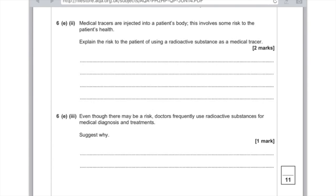6E part 2, medical tracers are injected into a patient's body. This involves some risk to the patient's health. Explain the risk to the patient of using a radioactive substance as a medical tracer. Well, remember, radiation can cause ionization. That's one mark. And that ionization may mutate or kill healthy cells. Or you could say it could literally just cause cancer. Part 3, even though there may be a risk, doctors frequently use radioactive substances for medical diagnosis and treatments. Suggest why. And you just need to say that it's due to the benefit of that diagnosis or that treatment. Or you could have even written that it may be the only procedure available.